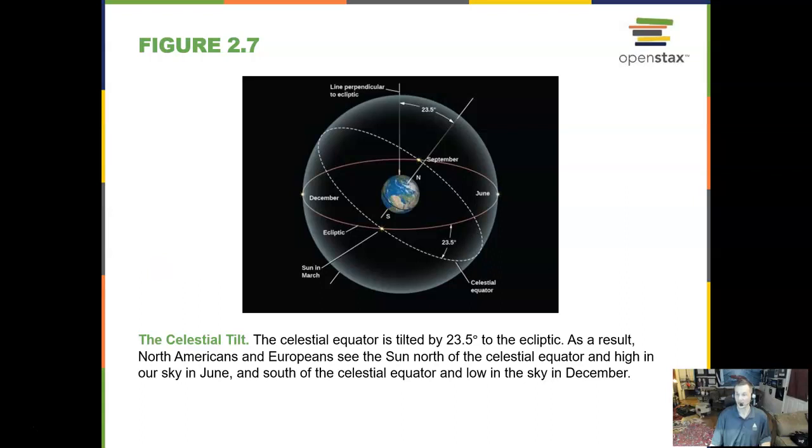Now the celestial equator on the sky is tilted 23 and a half degrees to this ecliptic, the path of the sun and the moon and the planets in the sky. It's an apparent path. And so we see different things again than what you would see in the southern hemisphere.